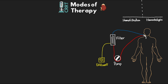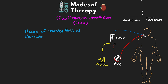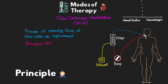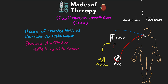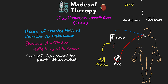The first mode we're going to talk about is Slow Continuous Ultrafiltration, or SCUF. This is the process of removing fluid — ultrafiltrate or effluent — at slow rates and without using any replacement fluid. This mode uses the principle of ultrafiltration, but because of the slow rate, we have little to no solute clearance, also known as convection. The main goal of SCUF is the safe removal of fluid from a patient who has fluid overload. We're not using any dialysate or replacement fluid.